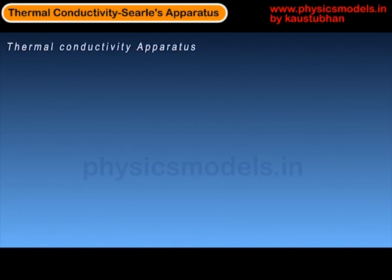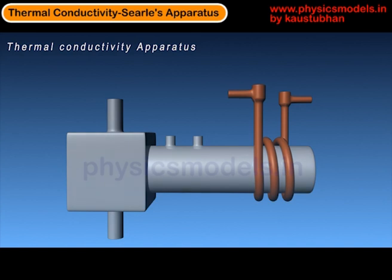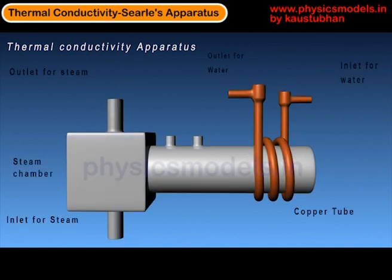Let's look at an animation, and the mechanism of this experiment will become more clear. You have the steam box on the left-hand side. Steam comes in from the bottom, goes around that unknown material, and then passes out through the top tube. Therefore, the cylindrical bar of that unknown material must jut into the steam chamber, and I will show you how it juts in.